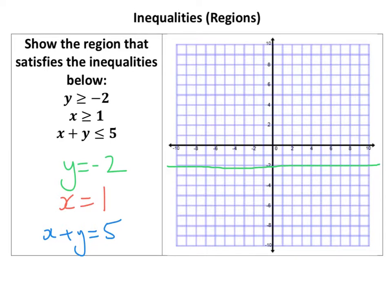The x equals one line I'm going to draw now. Let's try and get that a bit more accurate. There you go. Not too bad. The x equals one line, pretty straightforward. Again, could be dotted if it wasn't equal to, but there you go.